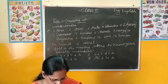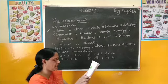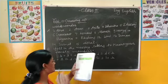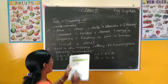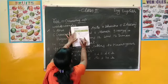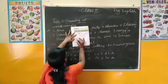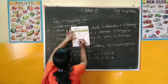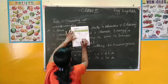अब हमें filling the blanks में fill करना है। First line already fill करके दी गई है: 'An elephant is a large animal।' Second line में हम fill करेंगे: 'It loves bananas, sugar cane, and leaves।' Bananas: B-A-N-A-N-A-S, sugar cane: S-U-G-A-R C-A-N-E।